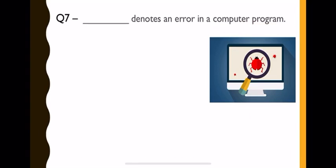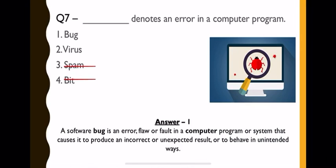Question seventh: what denotes an error in a computer program? Options are bug, virus, spam, and bit. Definitely spam and bit are not possible. The options are bug and virus. You need to know the difference between bug and virus. A virus is a piece of malicious software that reproduces and copies itself to other computers. A bug is an error found on a legal piece of software which prevents it from working as it should. The virus reproduces and copies itself. Bug is an error. The question asks what is an error in a computer program. So the answer is bug.